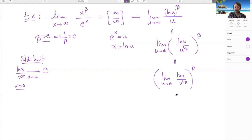So now we can apply this with alpha being 1 over beta. So we know now that this is 0 to the beta, which is just 0, and we're done. So here in fact we use this change of variables thing twice.